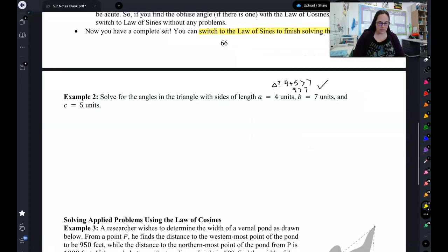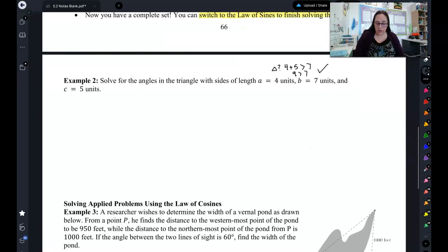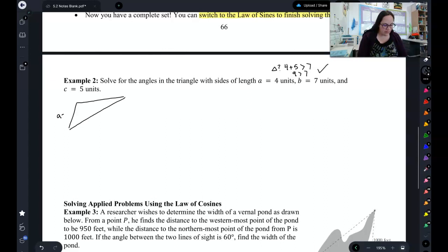Let's look at example two. We have a triangle with a equals 4, b equals 7, and c equals 5. So, a equals 4. Let's do c equals 5. b equals 7. So, go across, that would make that alpha. Across, that is beta. Across, this is gamma. First, we notice, hey, this is side, side, side.